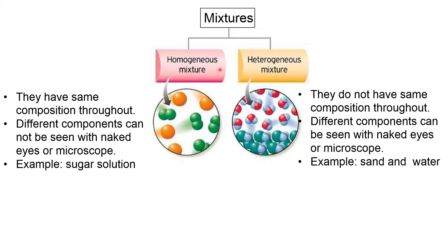The basic difference between homogeneous and heterogeneous mixtures is that in homogeneous mixtures, there is the same composition throughout, but in heterogeneous mixtures, they do not have the same composition throughout. For example, if you take a sugar solution, even 1 mL of that sugar solution would have the same composition as the whole glass. But in a mixture of sand and water, 1 mL would have a totally different composition from the whole glass.